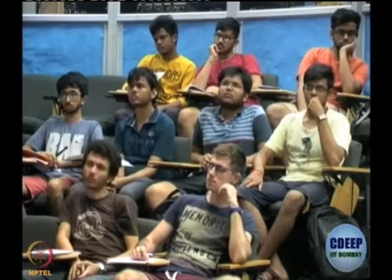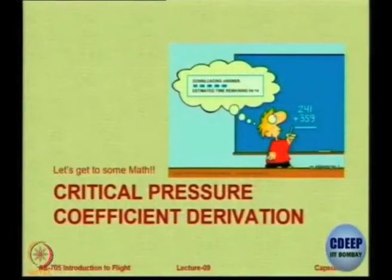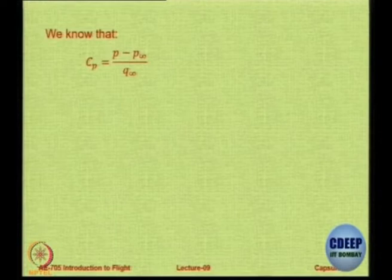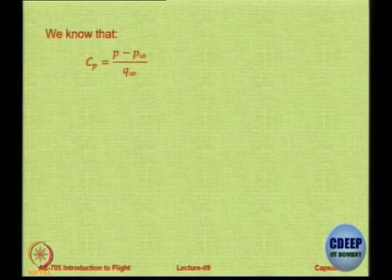This line is available — if you have the geometrical data you can get the value. The value of Cp will change depending on thin, medium, or thick, and it will increase as per the Prandtl-Glauert rule and reach the critical value at some particular point. So you can apply this uniformly. Let us do a little bit of maths to get the value of Cp critical.